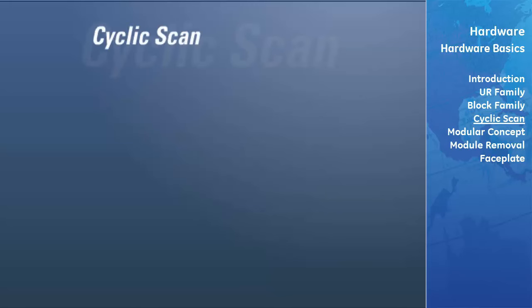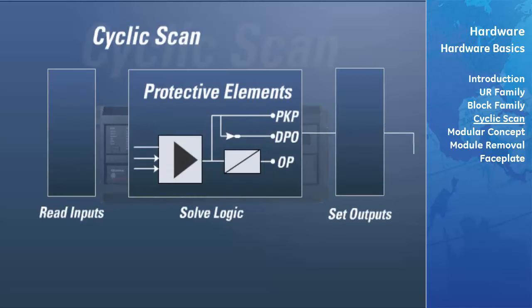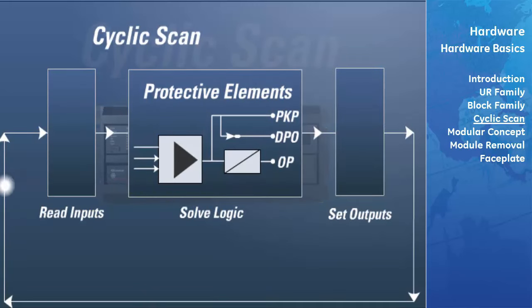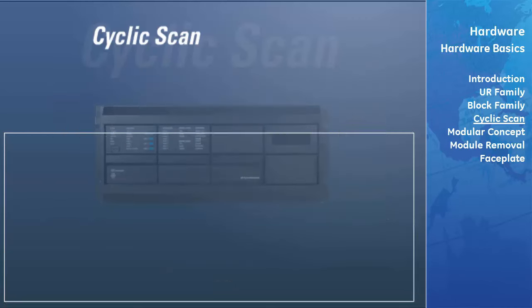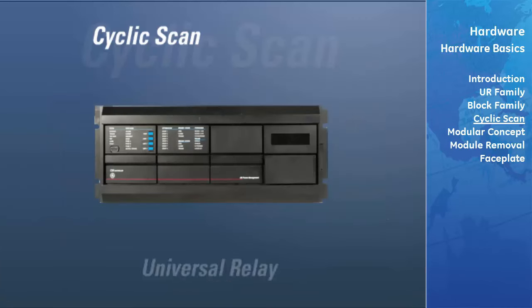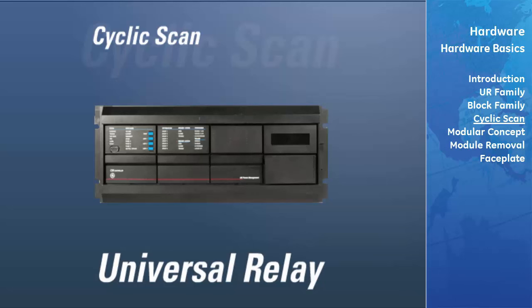The universal relay has a cyclic scan. The UR reads the inputs into an input status table, solves the logic problem through the UR flex logic equation, and then sets each output to the appropriate state in the virtual output status table. Any resulting task execution is priority interrupt driven. In its most simplified terms, this cyclic scan represents the basic operation of the universal relay.